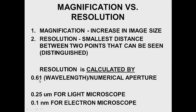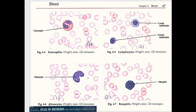Resolution can be calculated by the formula: 0.61 times the wavelength divided by the numerical aperture, which is the light-gathering capacity of the microscope. For the naked eye we see things in millimeters; for the light microscope we use micrometers, with a resolution of 0.25 micrometers; and for the electron microscope, resolution is in nanometers. The resolution is so much better with the electron microscope because electrons have a much smaller wavelength than visible light, giving a smaller numerator and therefore better resolution.